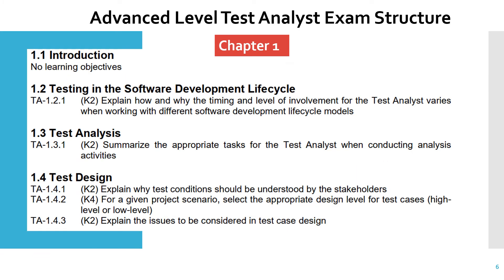Here you can see what type of questions would come from chapter one section-wise — this is to give you a rough idea of how the questions will look. Section 1.2 talks about testing in the Software Development Life Cycle, so a question from this section would be like: 'Explain why and how the timing and level of involvement for the test analyst varies when working with different SDLC models.' For test analysis, the question would be: 'Summarize the appropriate tasks for the test analyst when conducting analysis activities.'